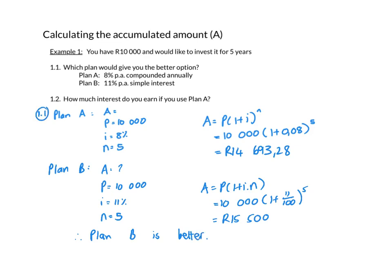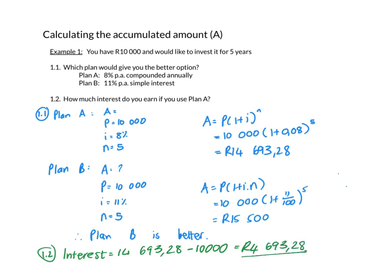Question 1.2 asks how much interest you'd earn using Plan A. Remember, the A value gives the accumulated amount, which is the principal plus the interest. So to find the interest, take the accumulated amount of 14,693.28 and subtract the original principal. That means the interest earned is 4,693.28 rand. Be careful — A does not give you the interest earned alone; it gives interest plus principal. To find interest, subtract the principal from the accumulated amount.